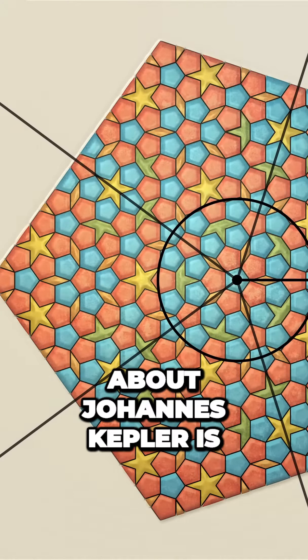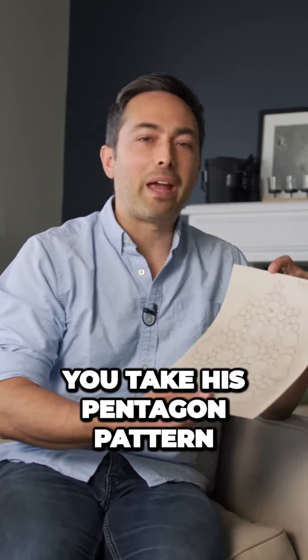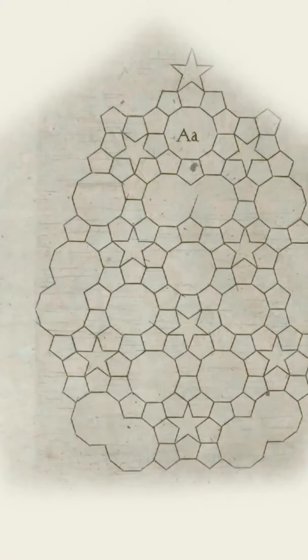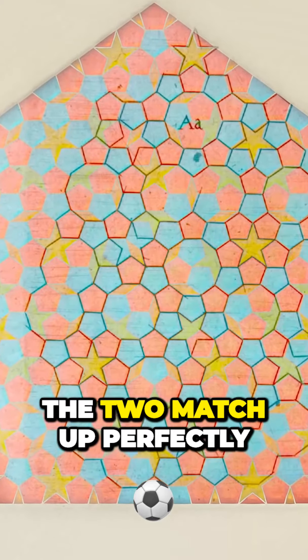The fifth thing about Johannes Kepler is that if you take his pentagon pattern and you overlay it on top of Penrose's, well, the two match up perfectly.